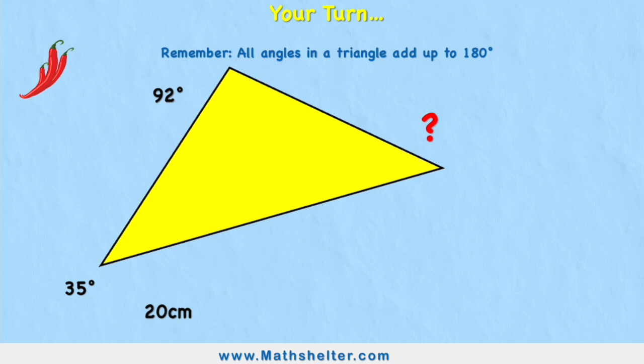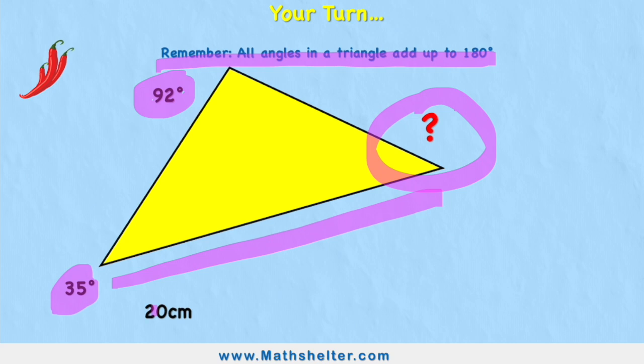Here's one for you. Remember, all angles in a triangle add up to 180 degrees. What is this missing angle? I have one angle at 92 degrees, one angle at 35, and a measurement across the bottom of 20 centimeters. What is this missing angle? Put your answers in the comments section. Good luck.